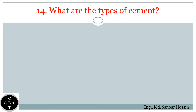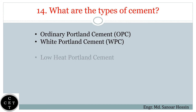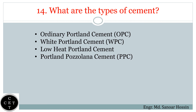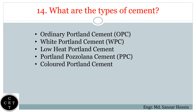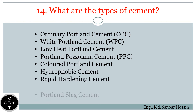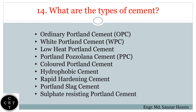Question number fourteen: What are the types of cement? Ordinary Portland cement (OPC), white Portland cement (WPC), low heat Portland cement, Portland Pozzolana cement (PPC), colored Portland cement, hydrophobic cement, rapid hardening cement, Portland slag cement, and sulfur resisting Portland cement.